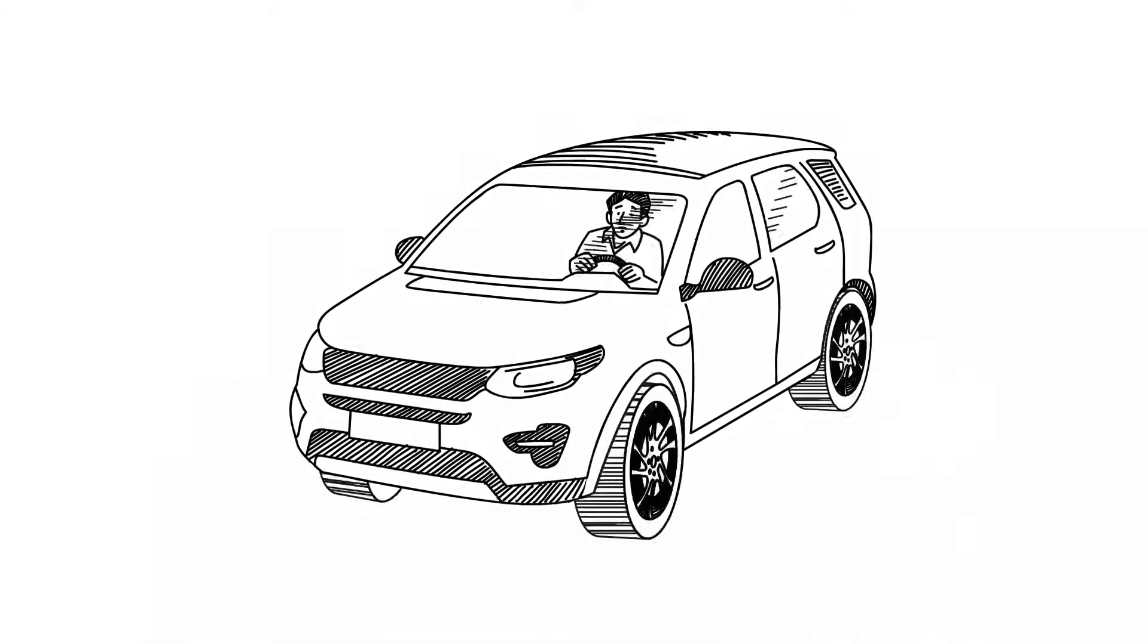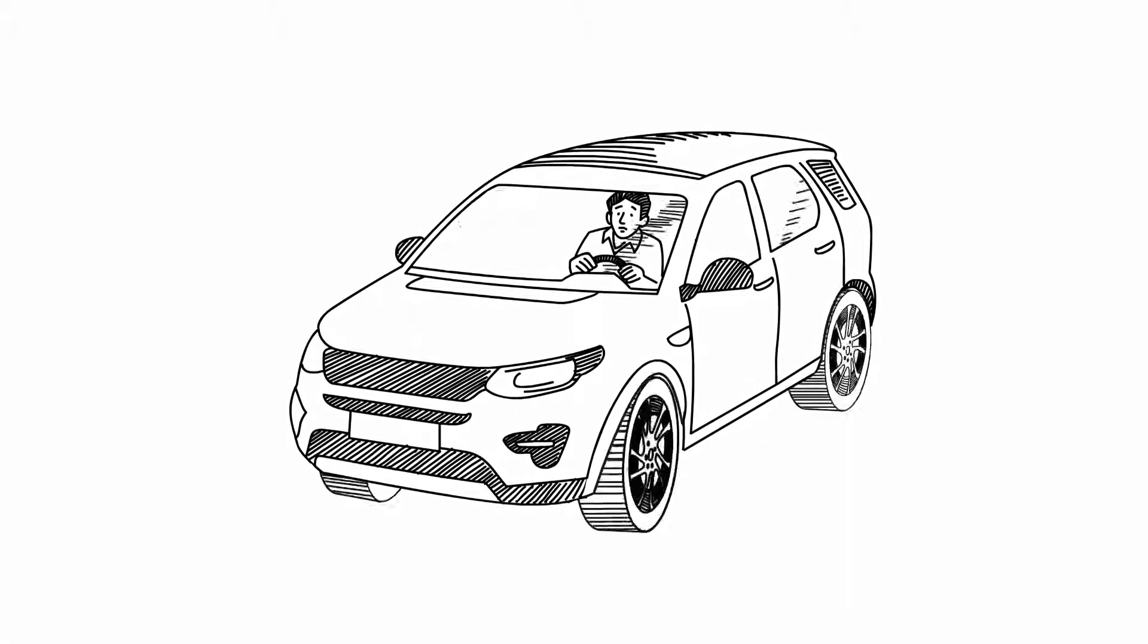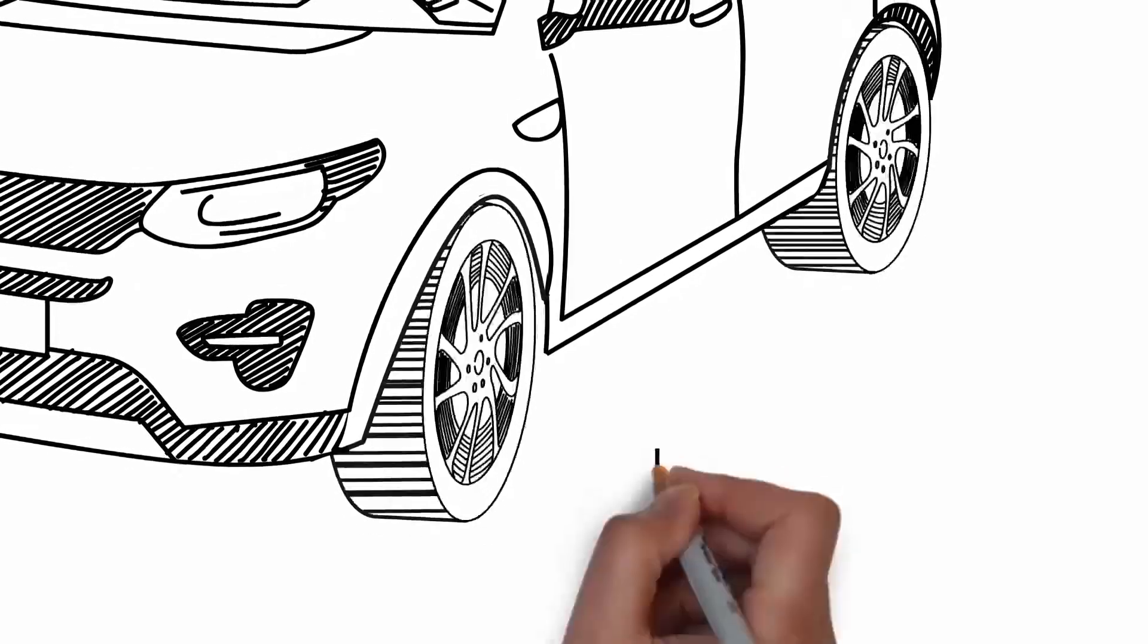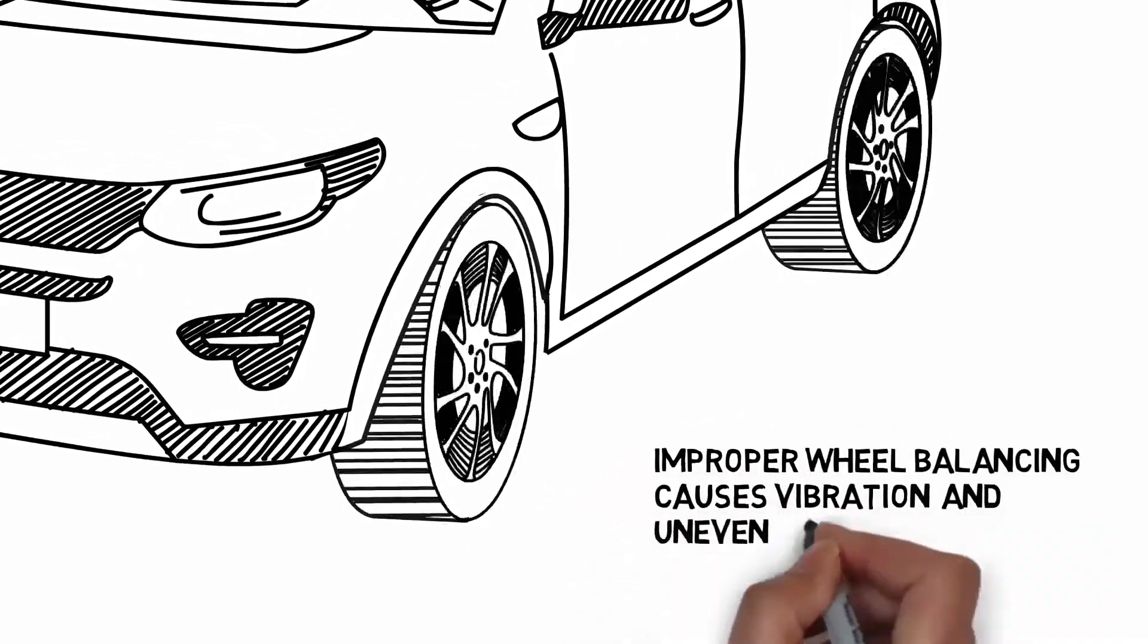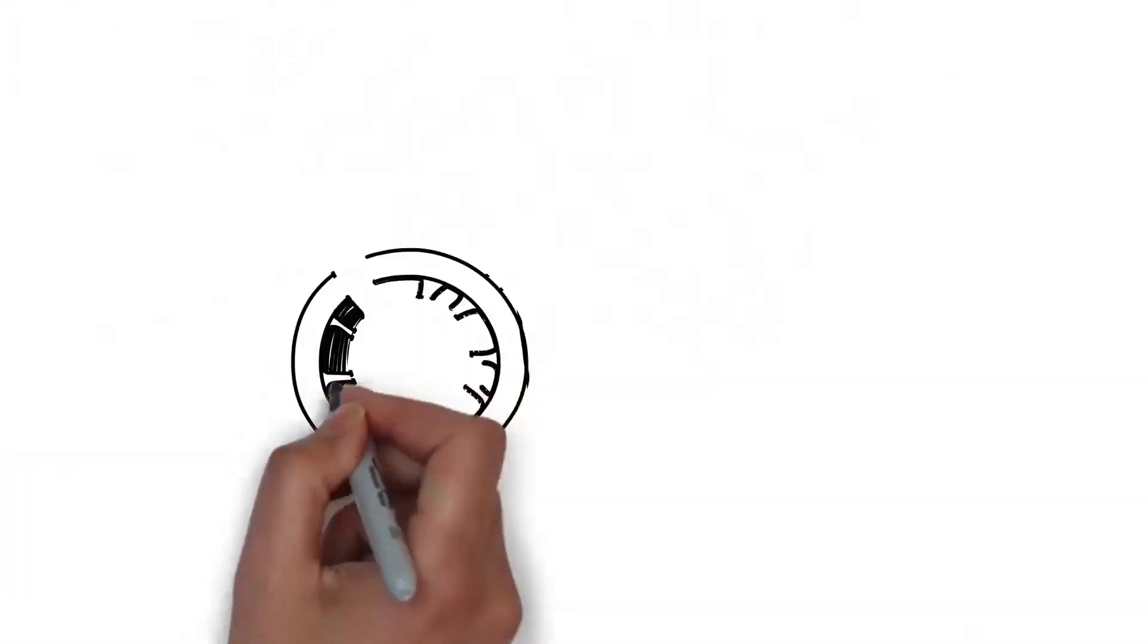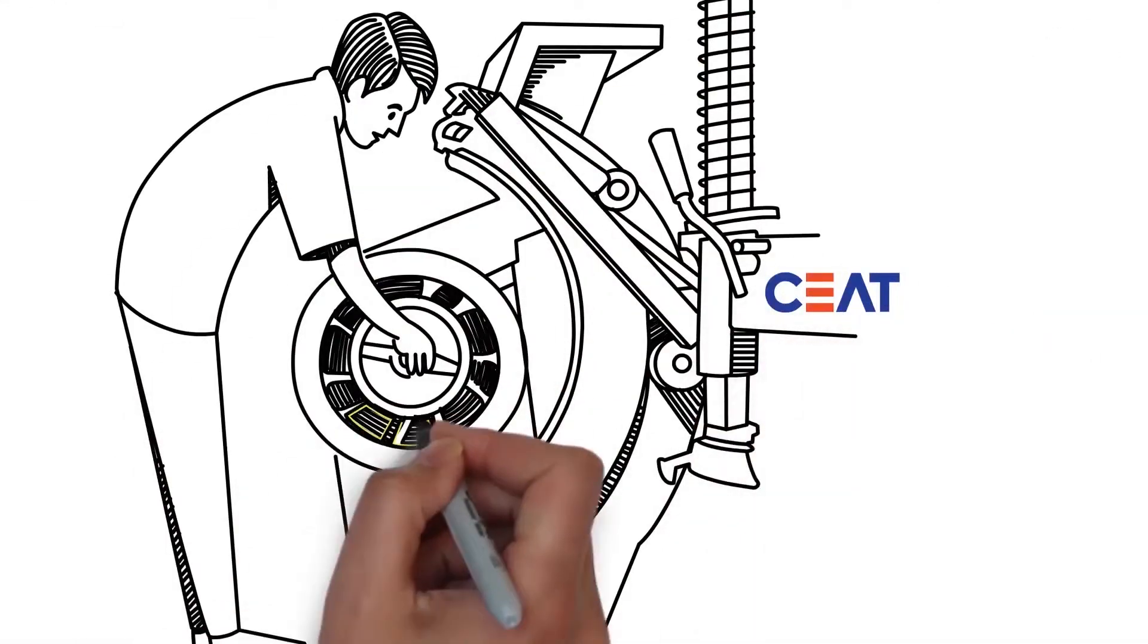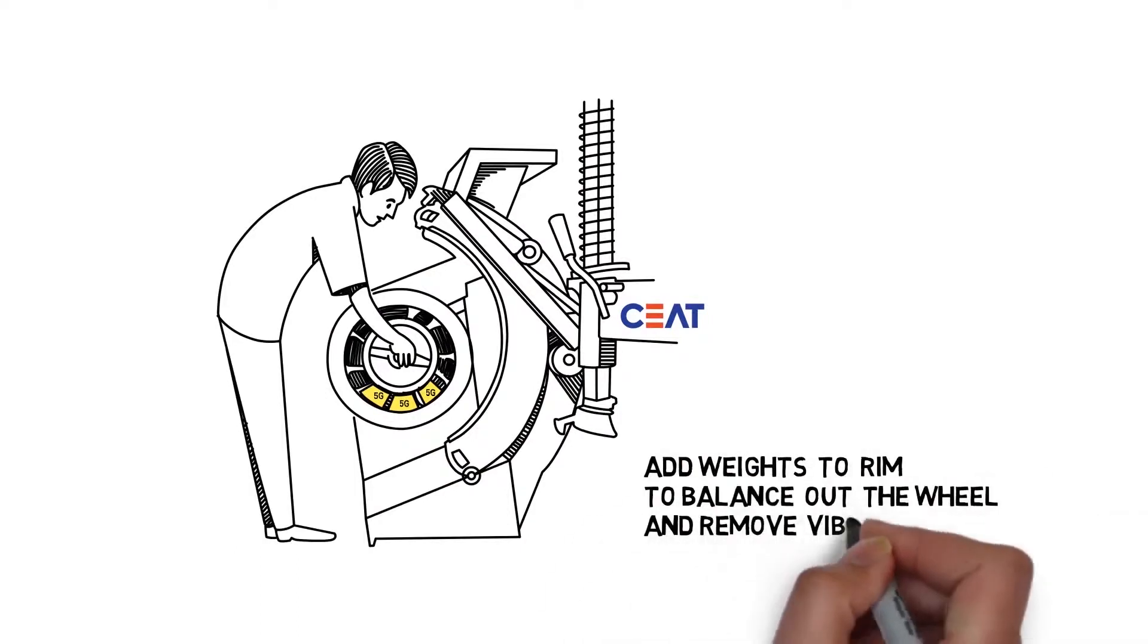Proper wheel balancing can have a major impact on your driving experience. If not balanced, weight differences on the tire will cause uneven rotations, annoying vibrations, and even uneven wear. Once the tire is fitted, weights can be added to the rim to even out imbalances. This ensures a smooth ride.